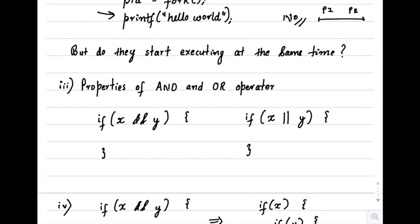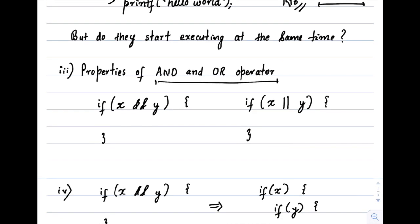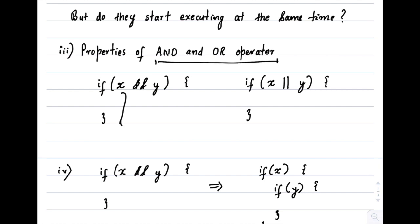Let's now revisit C programming and look at some important properties of the AND and OR operators, which are very useful when we look at fork examples involving IF statements. For 'if (X && Y)', if the value of X is 0, the compiler won't even check the value of Y. Since X is 0, the condition will be false regardless of Y, so it won't execute the IF body. But if X is 1, we have to look at Y — if Y is 0, we cannot enter the IF; if Y is 1, we can.